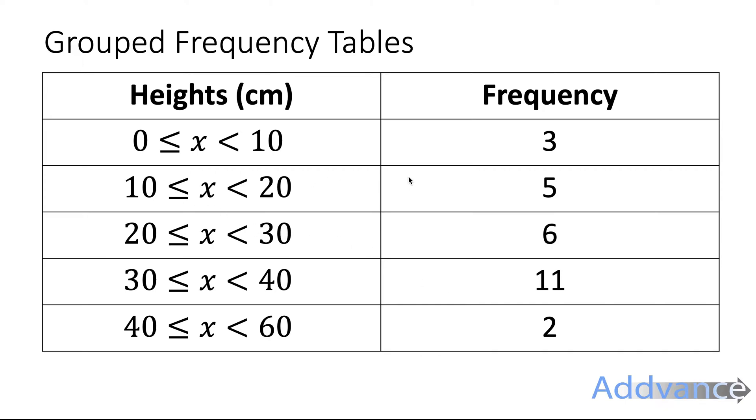As you can see there are three plants between 0 and 10 centimeters tall. There are five plants between 10 and 20 centimeters tall. There are six between 20 and 30 centimeters tall, and there are 11 plants between 30 and 40 centimeters tall. And there are two plants, only two, between 40 and 60 centimeters tall.